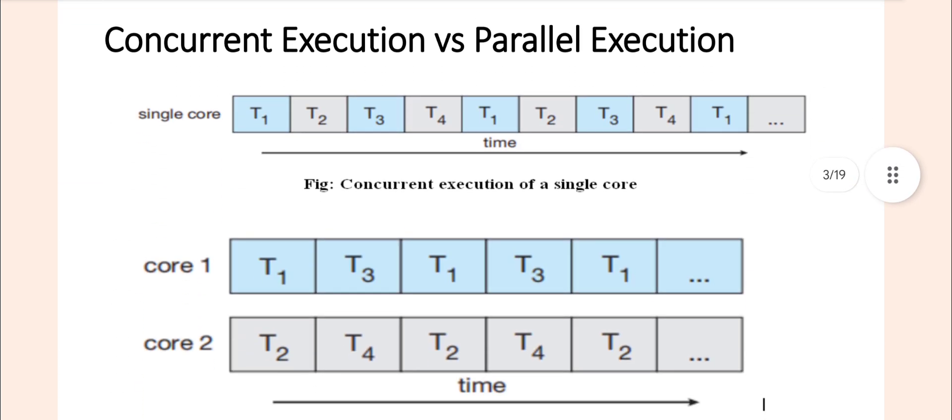Then what is the difference between concurrent execution and parallel execution? See, the concurrent execution means a single CPU core switches between the tasks. Here, a single core is there. How many tasks are there? T1, T2, T3, T4. See, on a single core, CPU tasks are executed one at a time. The tasks are executed one at a time, but make progress by sharing the CPU.